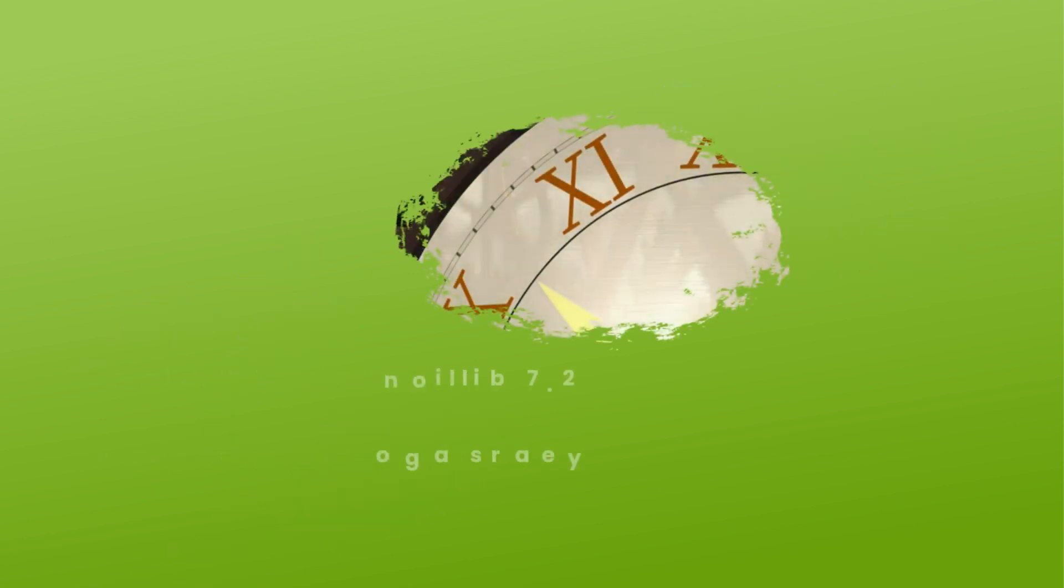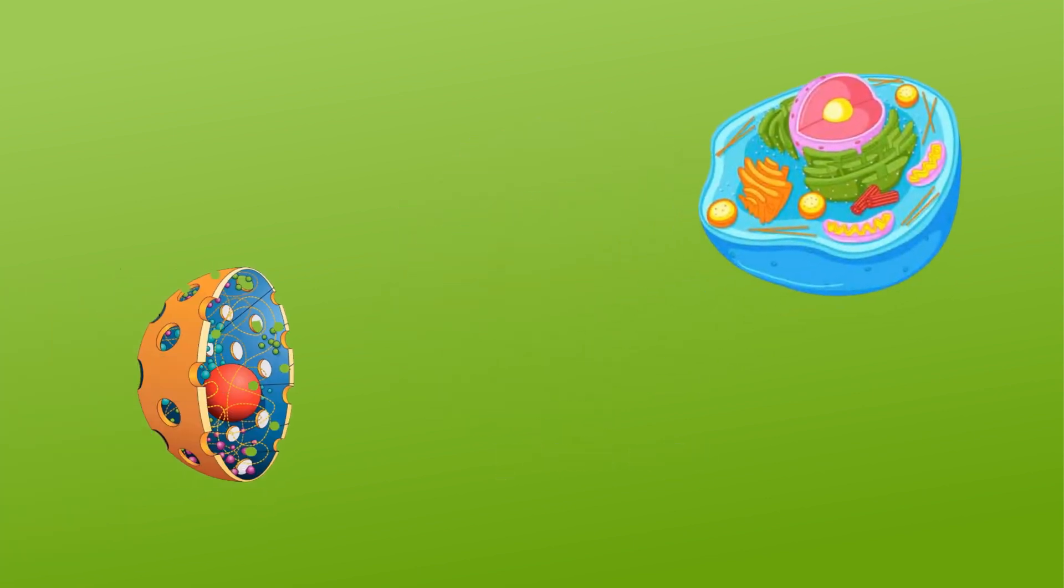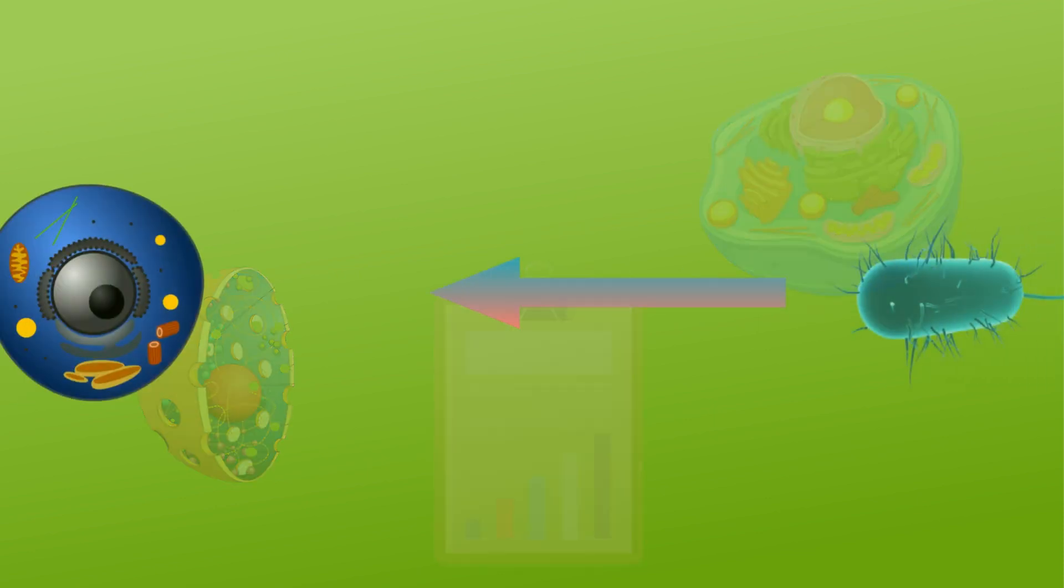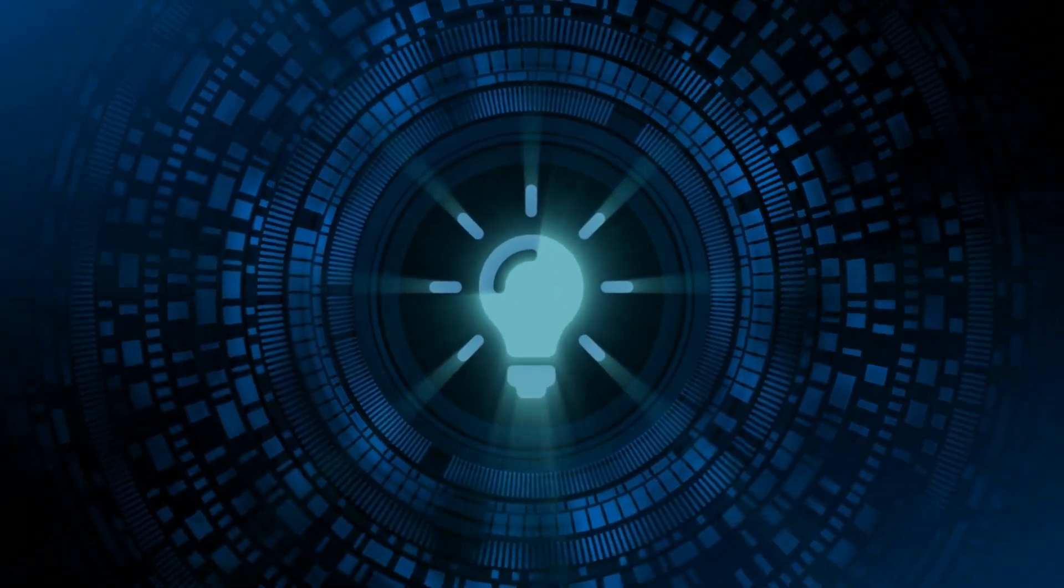It isn't until 2.7 billion years ago that eukaryotes, cells with a nucleus enclosed in membranes, appear in the fossil record. Eukaryotes evolved from prokaryotes. Here is how that is thought to have happened.